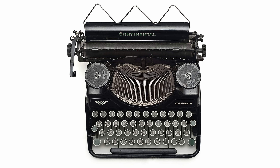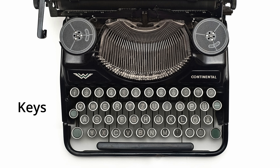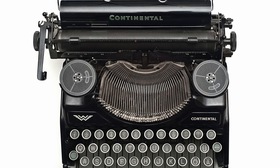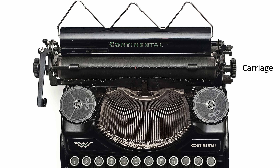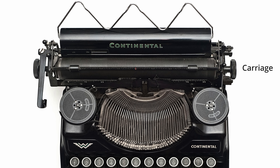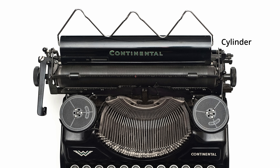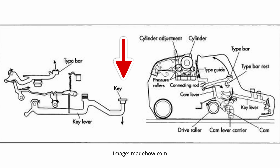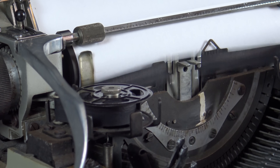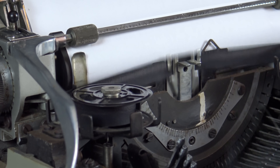Before we get started, it would be helpful to learn how a typewriter actually works. First, we have the keys, which is where the letters, numbers, and syllables are. Next, we have the carriage, which is the part that holds the paper. The paper is wound around a cylinder, which keeps it tight while typing. When you strike a key, the corresponding type bar attached to the end of the key swings up. At the end of the type bar, the corresponding letter slug strikes the ink ribbon, leaving the letter on the paper.